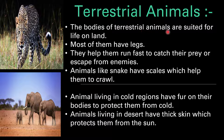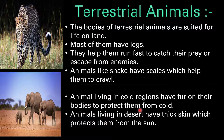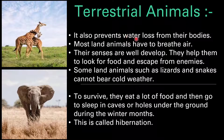Now let's discuss terrestrial animals in detail. The bodies of terrestrial animals are suited for life on land. Most of them have legs which help them to run fast to catch their prey or escape from enemies. Animals like snakes have scales which help them to crawl. Animals living in cold regions have fur on their bodies to protect them from cold. Animals living in deserts have thick skin which protects them from the sun and also prevents water loss from their bodies. Most land animals breathe air and their senses are well developed.